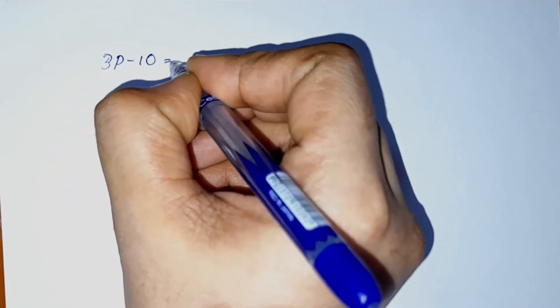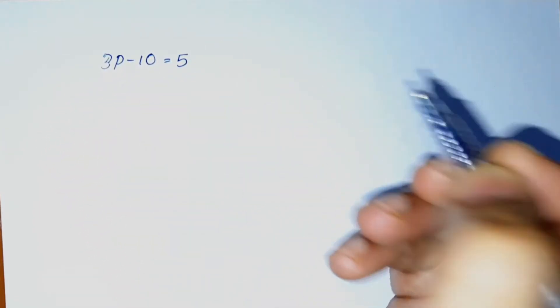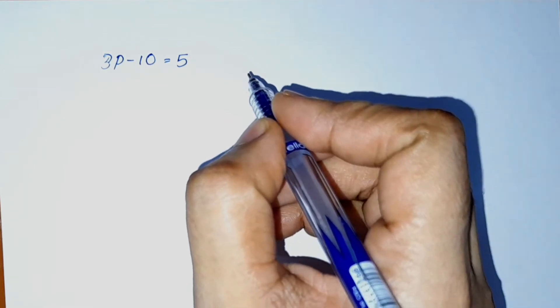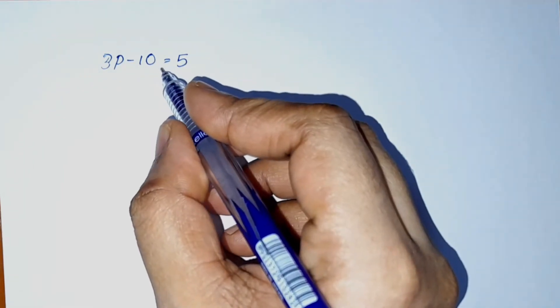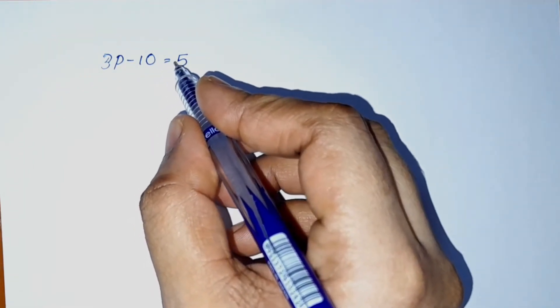I am going to do an example. The equation is 3p minus 10 is equal to 5. This is our equation. We are going to solve this equation in two steps.